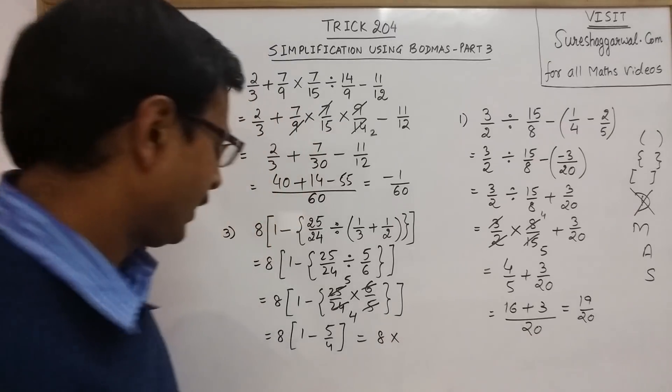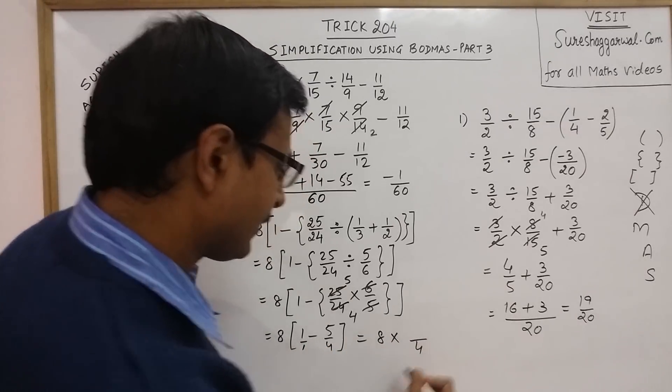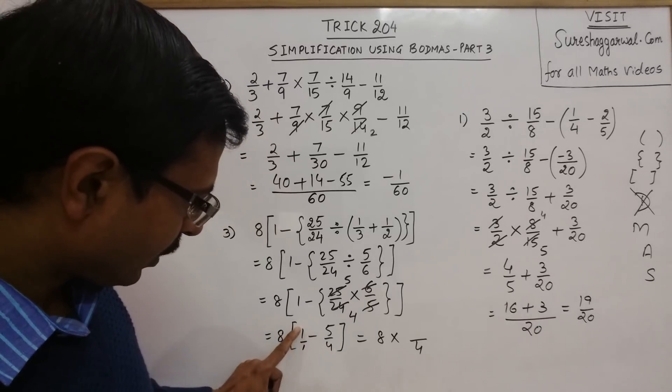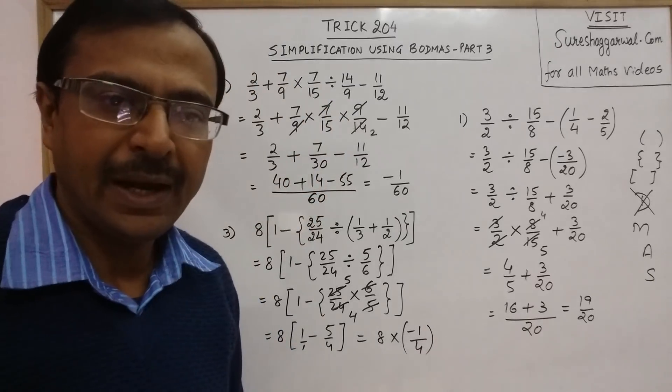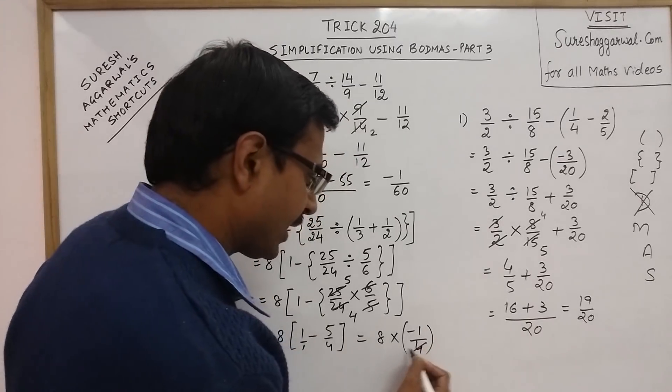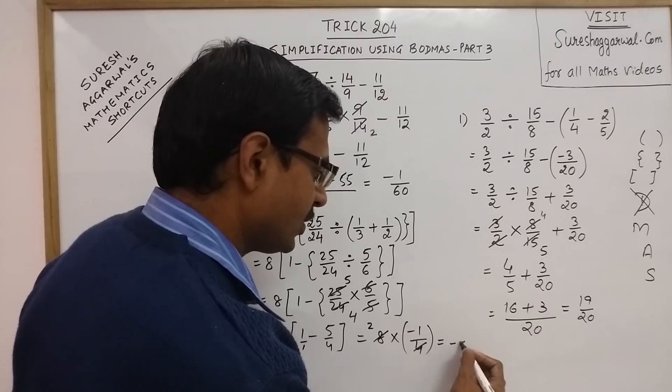Now two brackets are gone, only the square bracket is there now. So 8 into, now just take the LCM again, you have 4 as the LCM. So 4 minus 5, that is minus 1. And finally, 4 cancels 8 two times, so your answer is minus 2.